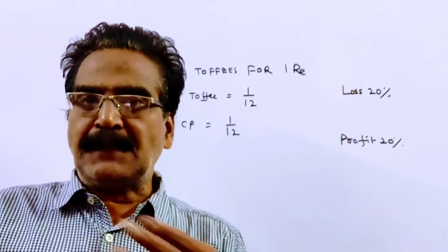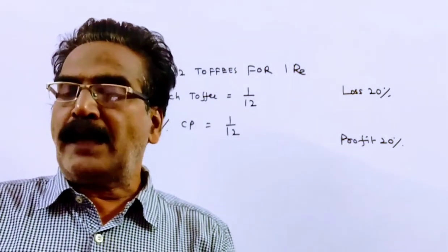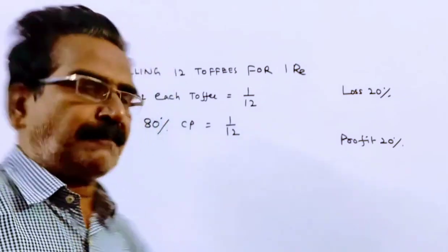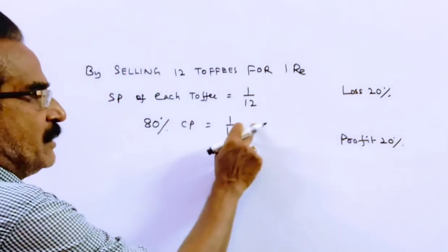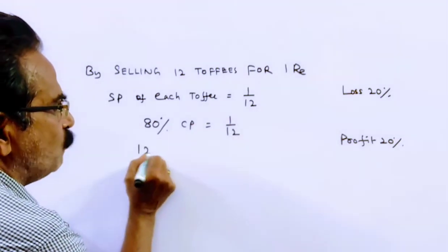Friends, now we want 20% profit. That means we have to find 120% of the cost price. If 80% is equal to 1 by 12, what is 120%?